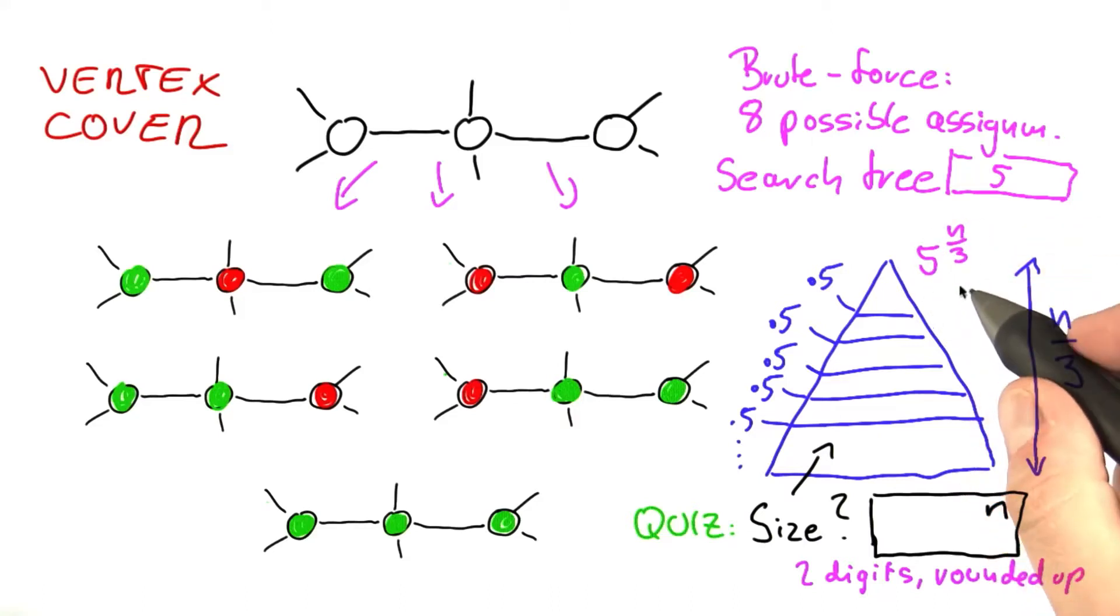And the answer here is 5 to the power of n thirds, which is 1.71 to the power of n.